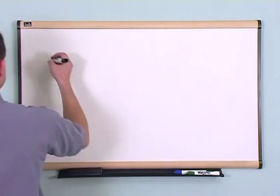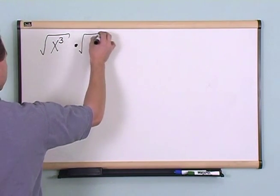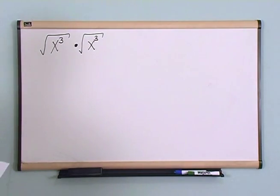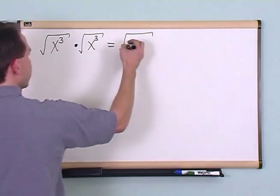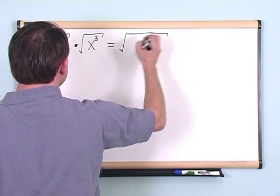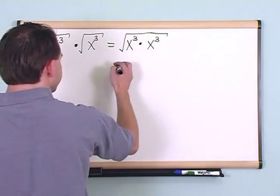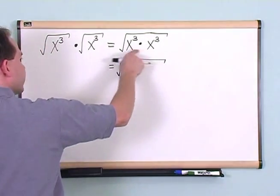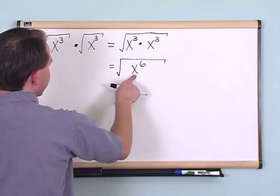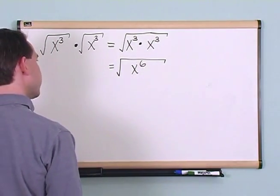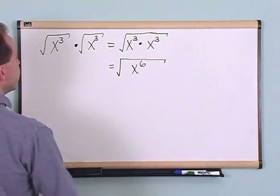Let's work with some variables here to mix things up. If I have the square root of x to the third power times the square root of x to the third power, that's going to equal a new square root with x cubed times x cubed inside. Remember, when you're multiplying variables with an exponent, all you do is add the exponents, so you write x down and add the exponents, giving you x to the sixth power under the radical.